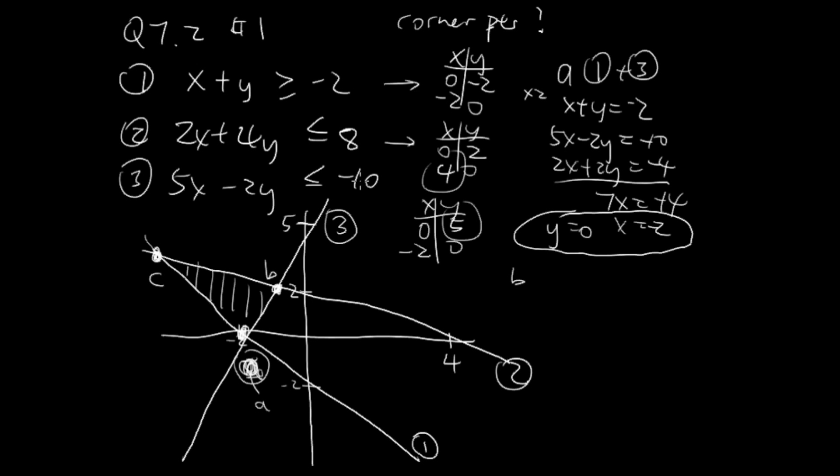Point B is line 3 and line 2. We have 2x plus 4y equals 8 and 5x minus 2y equals negative 10. I take the second equation times 2: 10x minus 4y equals negative 20. Add them: 12x equals negative 12, so x is negative 1. I plug this in: negative 2 plus 4y equals 8, so y is 6 over 4, which is 3 half.